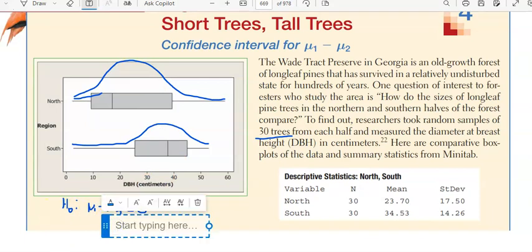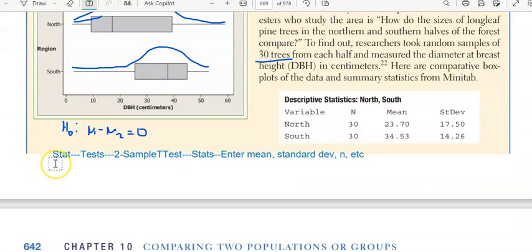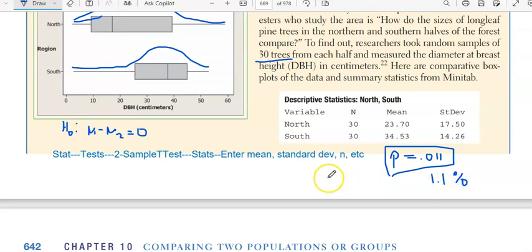To test the null hypothesis that there's no difference between the two tree lengths, as in μ₁ - μ₂ is 0, you enter STAT in the calculator, go over to TEST, look for two sample t-test, go over to STATS, enter the mean, the standard deviation, and the number size, and then do it again for the southern trees. And then hit the not equal to button. When you do that, you should get a p-value of about 0.011 or about 1.1%. This is less than 5% on a 95% confidence interval. So we have to reject the null. There's clearly a difference between both of those.